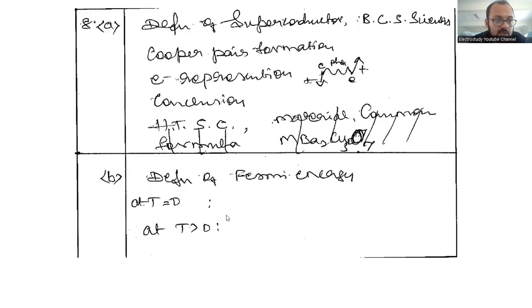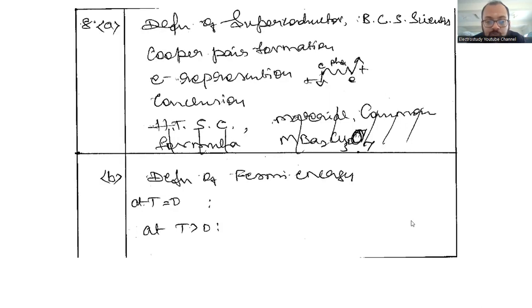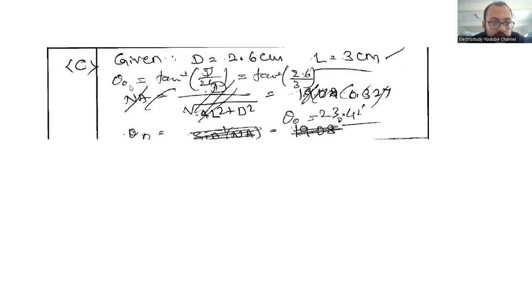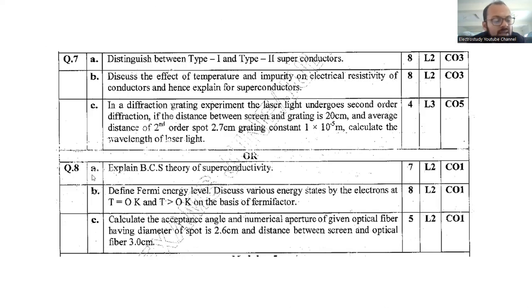Question 8c: Calculate the acceptance angle and numerical aperture of the given optical fiber having diameter of spot 2.6 cm and distance between screen and optical fiber 3 cm. Draw the diagram and write the given data - this carries 5 marks. Calculate theta naught using this formula. Take the tan inverse to get theta naught. Very simple substitution.